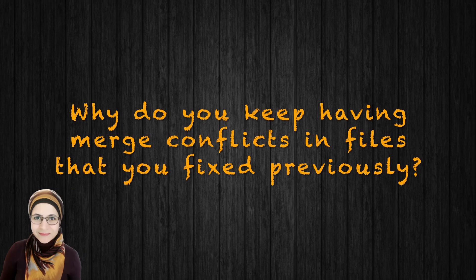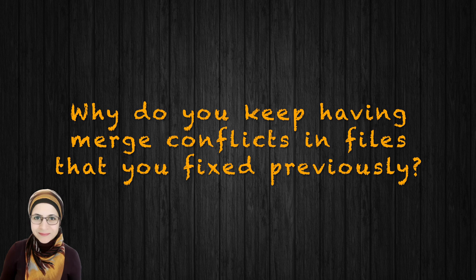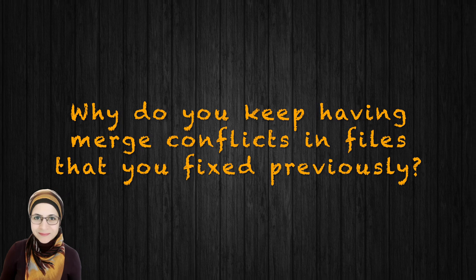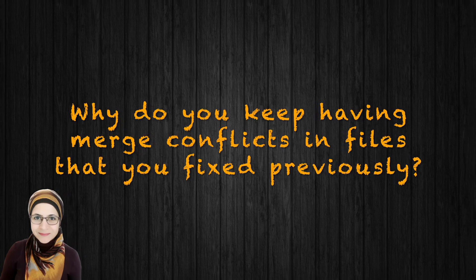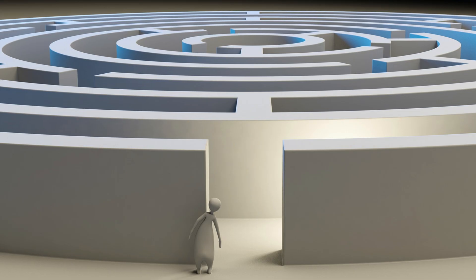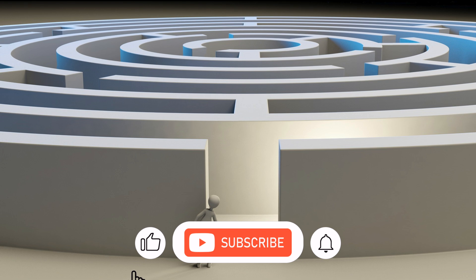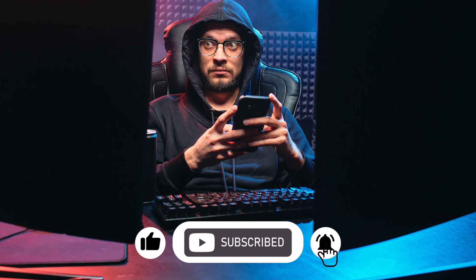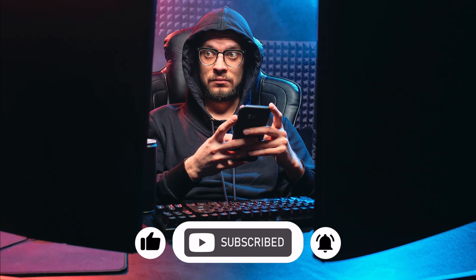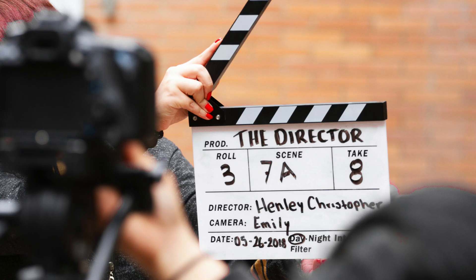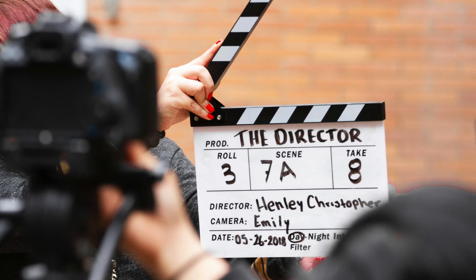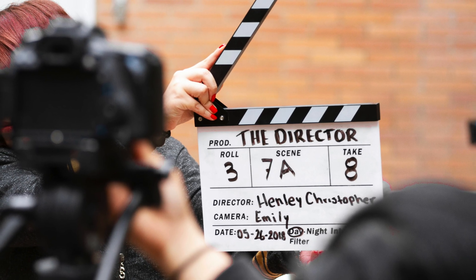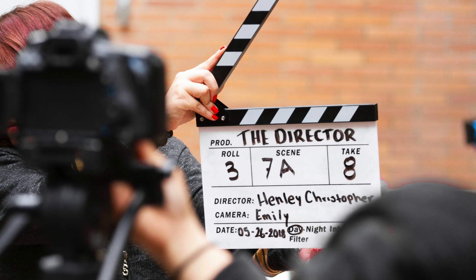Why do you keep having merge conflicts in files that you fixed previously? Feeling like you're stuck in a loop fixing the same merge conflicts over and over is frustrating. So let's unravel why those pesky merge conflicts keep reappearing. We need to repeat the previous scenario but with additional steps.